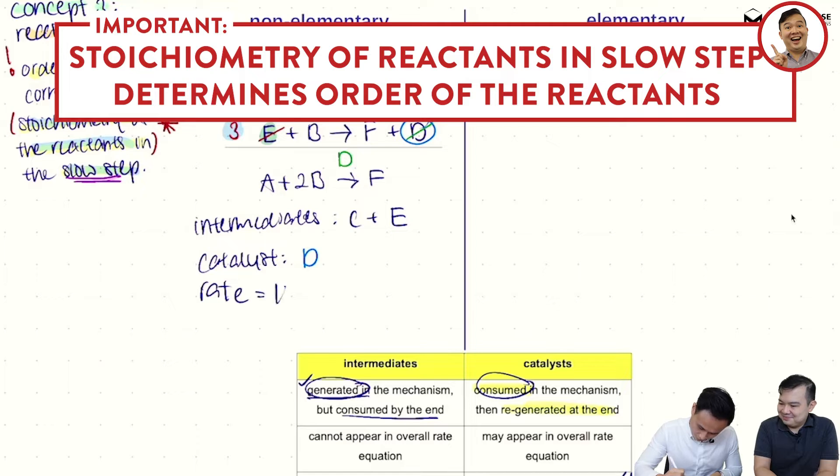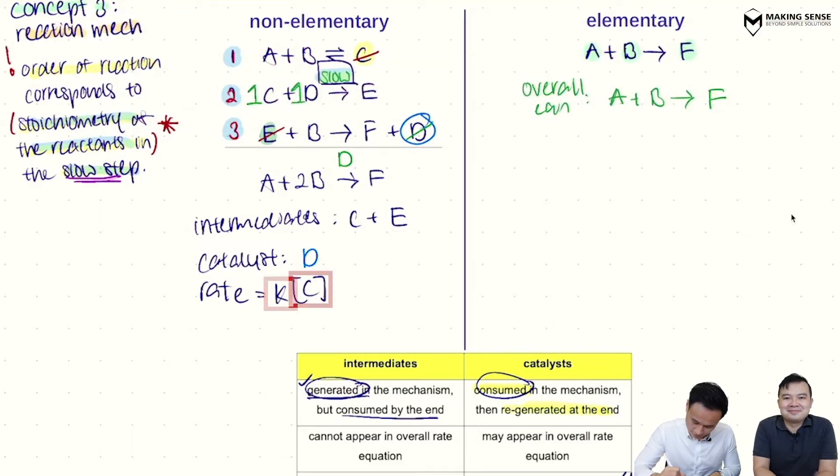So Mr. Ting, can you tell me what are they? Well, I see that in my slow step, it is C plus D gives me E. So the stoichiometry is one to one. That's right. And it turns out this stoichiometry is going to correlate to the order of the reactants inside the rate equation. So I can write my rate equation for you right now. So it's rate constant multiplied by the concentration of C, raised to the power of the stoichiometry ratio, which is one. And I can do the same thing for D, which is also one.